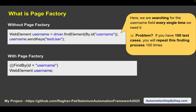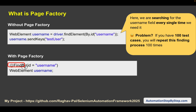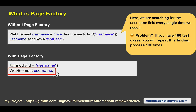With Page Factory, we use the @FindBy annotation, and whatever property we have available for the element — whether it is id, xpath, name, etc. — we give it like this. Page Factory is also a class within the Selenium library, so we don't have to add anything extra. We say @FindBy, give the property of that particular element, and then declare the element.